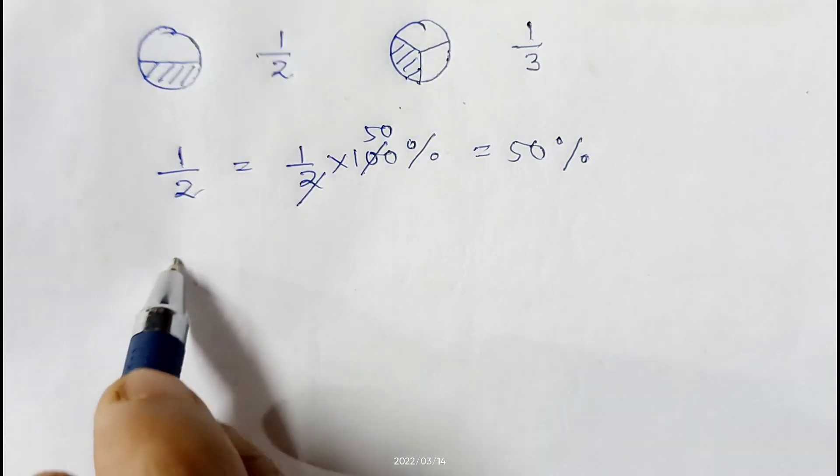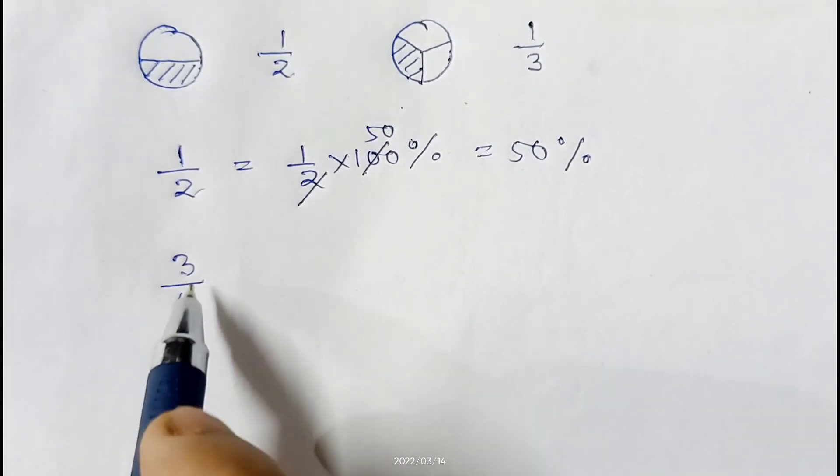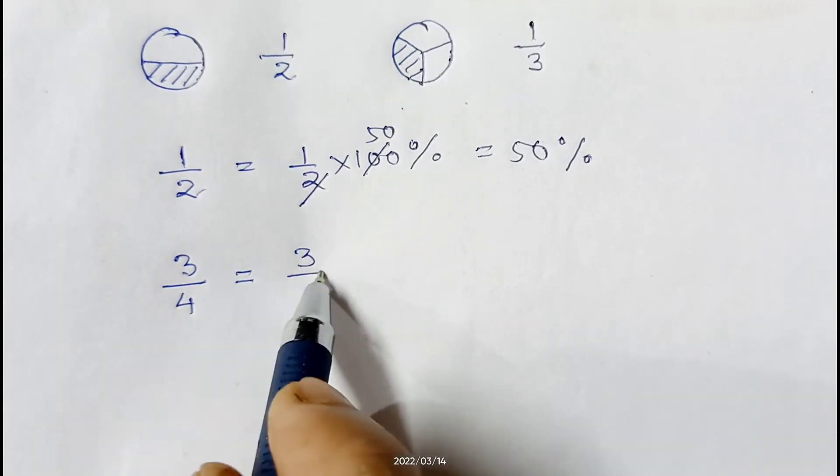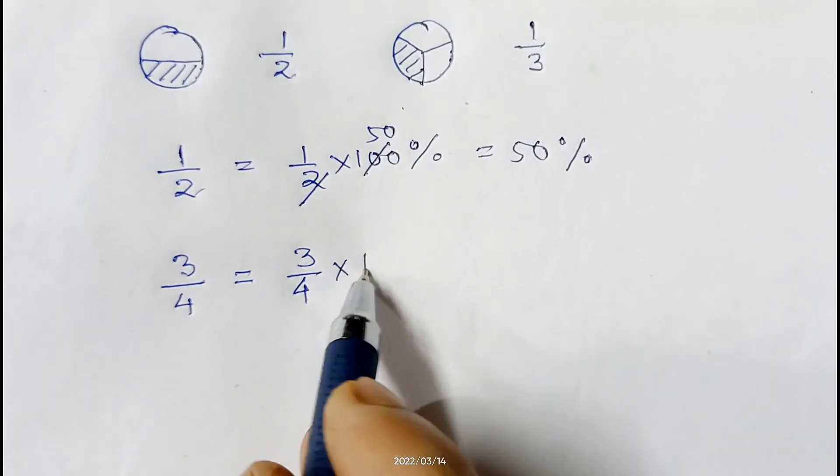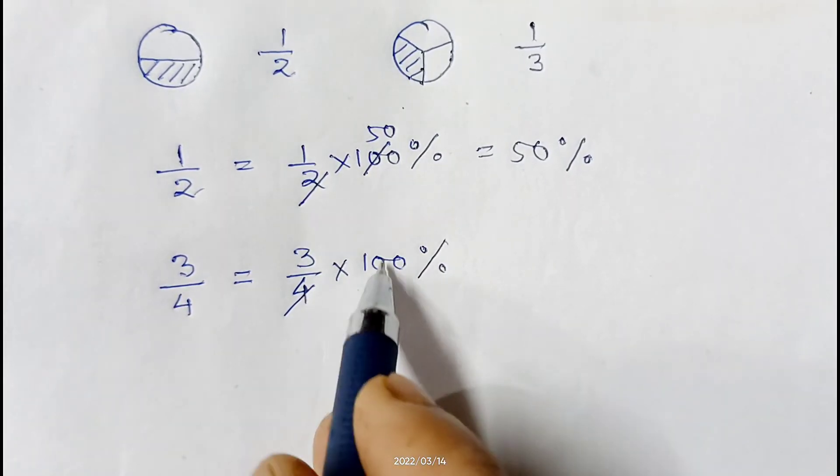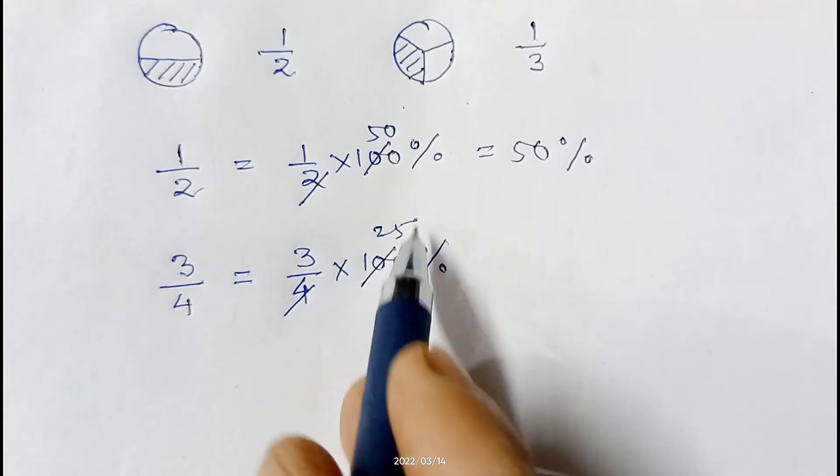Now suppose 3/4, we want to convert this fraction in the form of percentage. We can write 3/4 equals to 3/4 into 100 percent. Then 10 to 4 can be cancelled, 4 25 to 100, and 25 into 3 that will give 75.